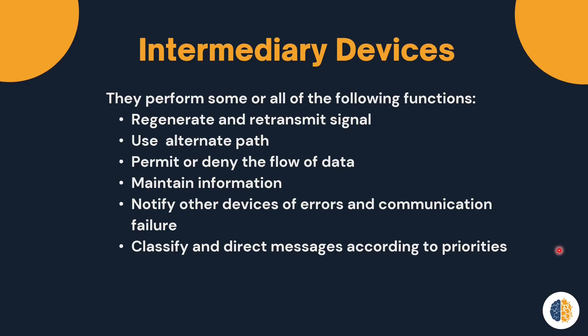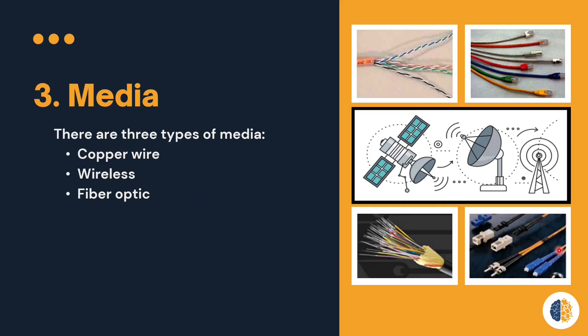Next, we will discuss the third network component, which is media. Media can be wired or wireless — sometimes called guided or unguided. There are three types of network media. The first one is copper wire, which uses electrical impulses to transmit signals from a sender to a receiver.